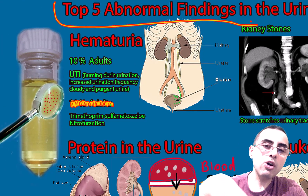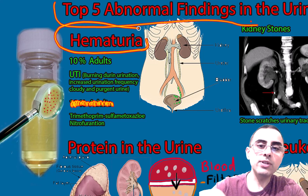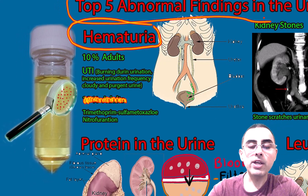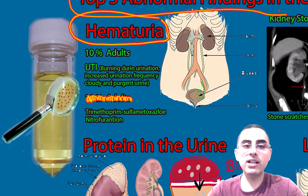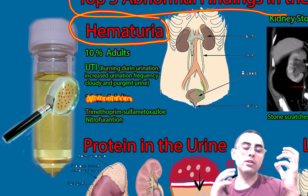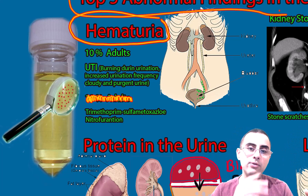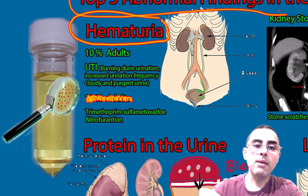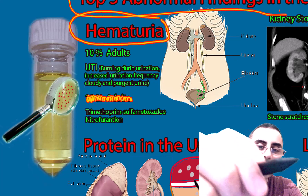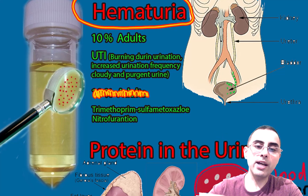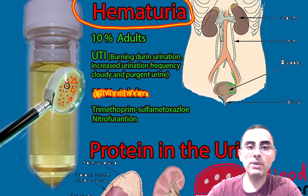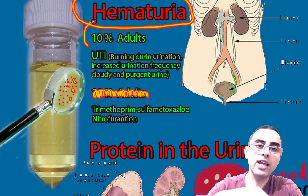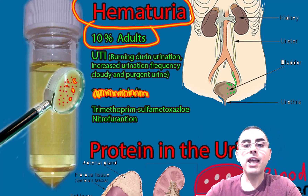The most common is hematuria, which means blood in the urine. There are two types: macroscopic hematuria, where blood is physically visible to the naked eye, and microscopic hematuria, where a microscope is needed to detect blood cells in the urine. Microscopic hematuria is more common, affecting around 10 percent of the adult population.